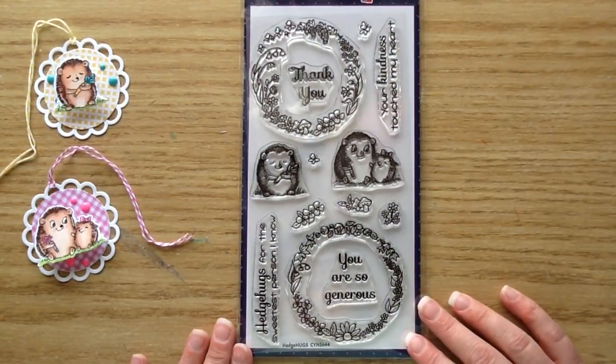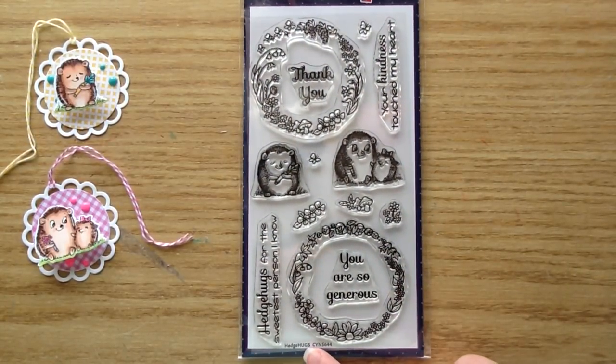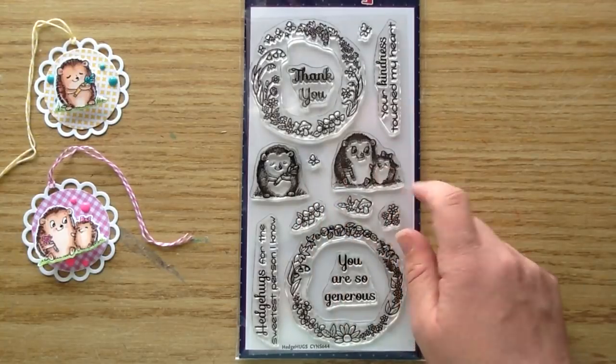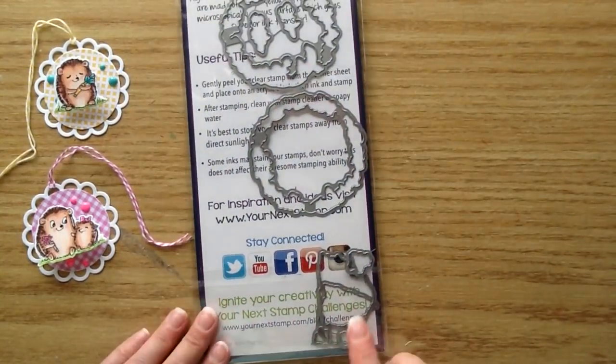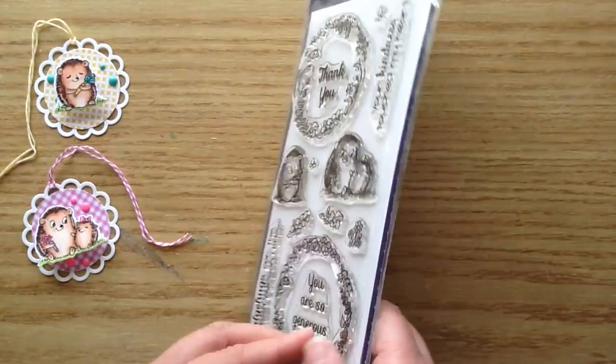Then I use this stamp set here which is called hedge hugs. It is so cute. I love all the elements on it but for the tags I just use these cute little hedgehogs and then I use the coordinating dies to trim those apart.